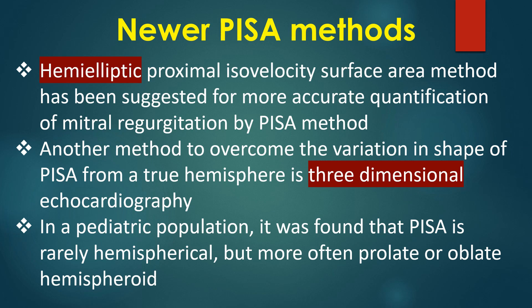The hemi-elliptic proximal isovelocity surface area method has been suggested for more accurate quantification of mitral regurgitation. Another method to overcome the variation in shape of PISA from a true hemisphere is three-dimensional echocardiography.